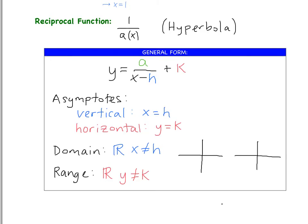We have this a value. When a is positive, our two branches are going to be in the upper right and the lower left. When a is negative, the branches shift — they'll be in the top left and the bottom right. This is really all we need to know for now, and then we'll go on and practice some graphing. Let's go ahead to the next page.